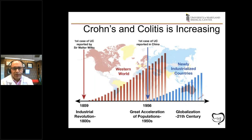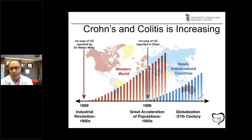Crohn's and colitis are increasing. The first reported case goes back to 1859, and it was primarily a disease of industrialized, Western economies. But in the developing world, we're starting to see an increase in cases. It's now estimated that about 3.1 million Americans — about 1.3% of the U.S. population — have Crohn's and colitis.